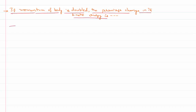To solve this problem, first we need to know the relation between momentum and kinetic energy. Kinetic energy is the energy associated with a body that is in the state of motion, moving with a certain velocity. The formula for kinetic energy is half mv squared.